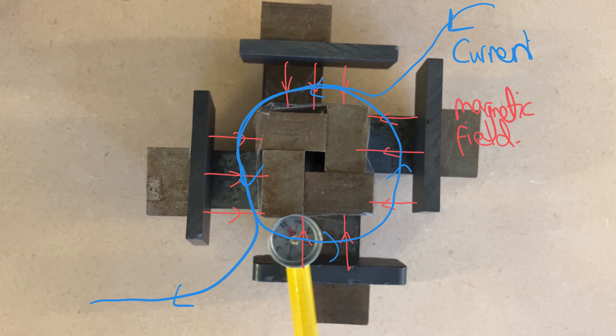As we have a current flowing in a magnetic field we will get a force from the motor effect and we can use Fleming's left hand rule to predict the direction of the force.